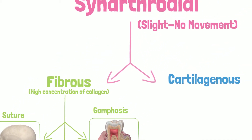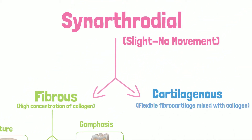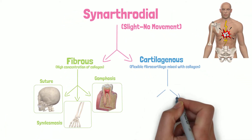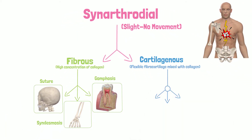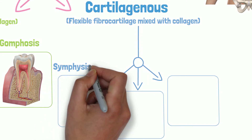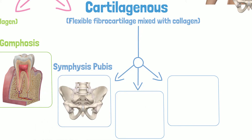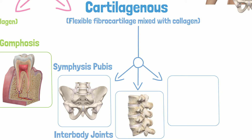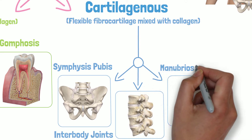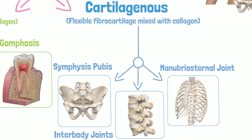Now, the cartilaginous joints. They are composed of flexible fibrocartilage mixed with collagen. Usually, they exist in the midline of the body. Examples of cartilaginous joints are the symphysis pubis, interbody joints of the spine, and manubriosternal joints.